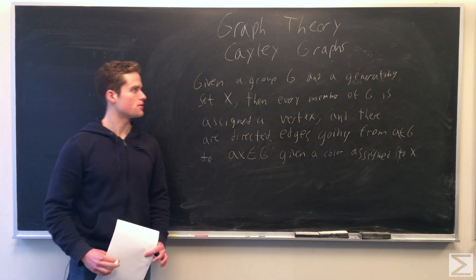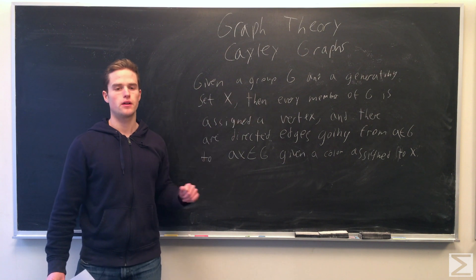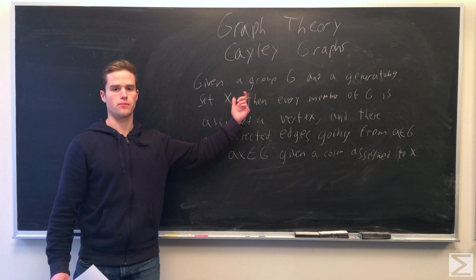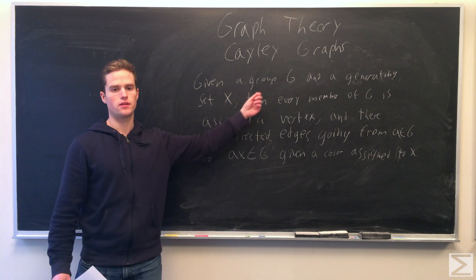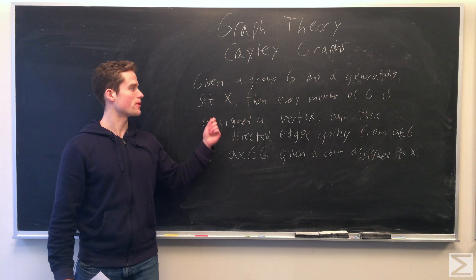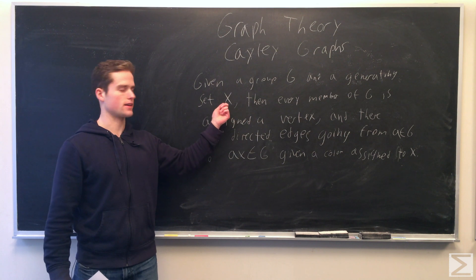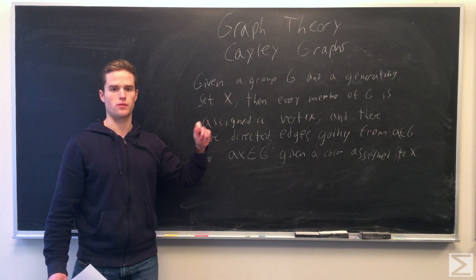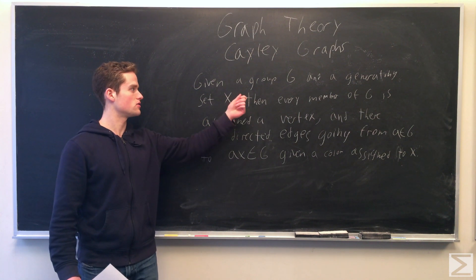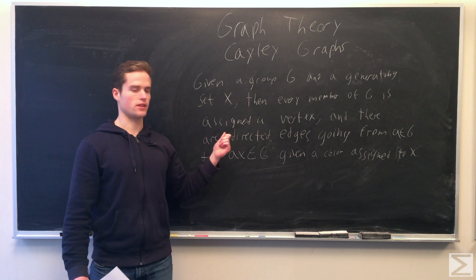A Cayley graph is a pretty intuitive notion. If we have a group G, for the group G we're going to make a graph. Every member of G will be given a vertex, and then we have a generating set for G. For the X's in this big X, X or X inverse, products of all those generate G.